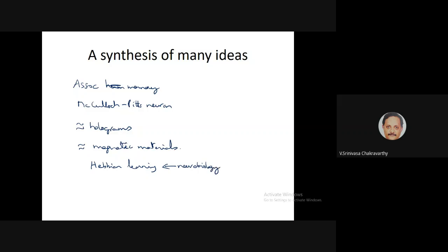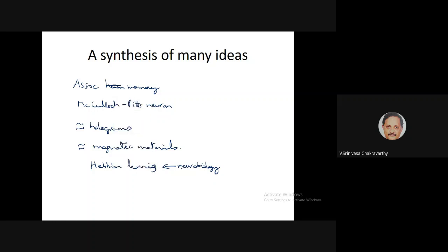To make this work, Hopfield used a learning mechanism called Hebbian learning, which came from neurobiology. When you store information in a neural network, you store it in the connections. The mechanism of how cellular activity gets stored in connections was proposed by Donald Hebb in the late 1940s, and was essentially proved true in neurobiological experiments in the 1960s. So Hopfield used this exact Hebbian learning mechanism, bringing together ideas from physics, engineering, psychology, and neuroscience.